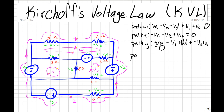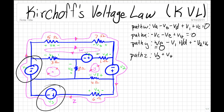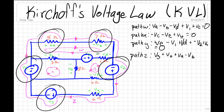Now let's look at our last path, path Z. For path Z, we have this voltage drop which is positive, so V3, plus this voltage drop which is also positive, so plus V4, plus this voltage drop which is also positive, so plus VA, plus this voltage drop which is negative, so minus VB, plus this voltage drop which is also negative, so minus V2, plus this voltage drop which is negative, so minus Vg, and the sum of these is going to be equal to zero.